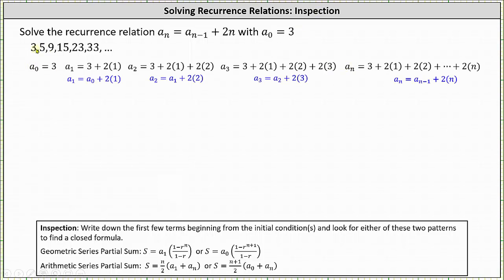First we know a sub zero is equal to 3. A sub one is equal to a sub zero plus 2 times 1 which is 3 plus 2 times 1 or 5. A sub two is equal to a sub one plus 2 times 2 which is 9 but we can write a sub two as 3 plus 2 times 1 plus 2 times 2. A sub three is equal to a sub two plus 2 times 3 which is 15 but we can also write a sub three as 3 plus 2 times 1 plus 2 times 2 plus 2 times 3.